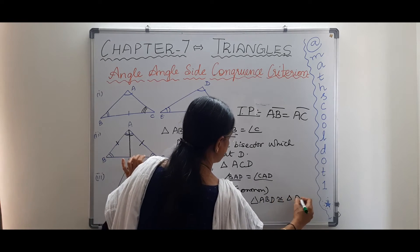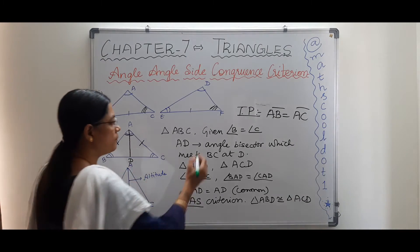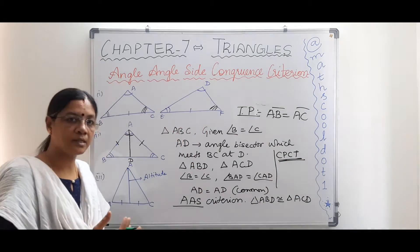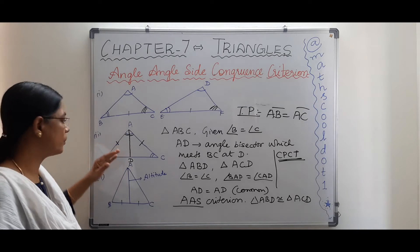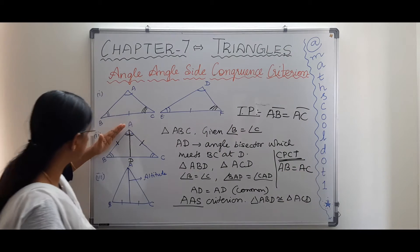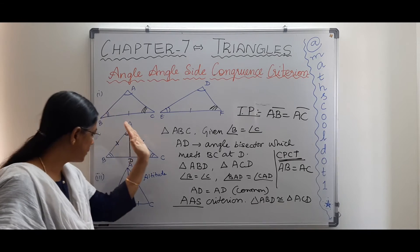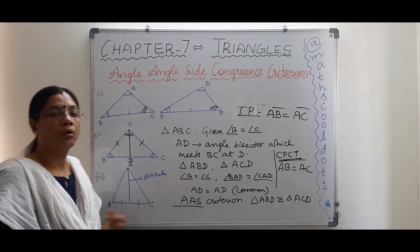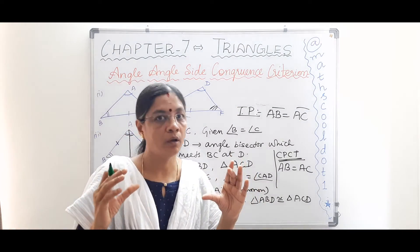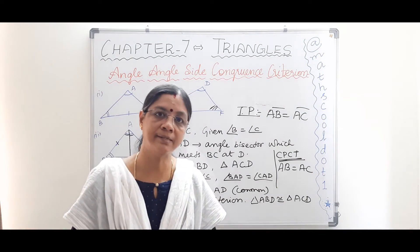According to the AAS criterion — two angles and a non-enclosed side — triangle ABD is congruent to triangle ACD. Therefore, by CPCT, AB equals AC, since AB is a side of triangle ABD and AC is the corresponding side of triangle ACD. This proves that when two angles in a triangle are equal, the sides opposite to them are also equal.